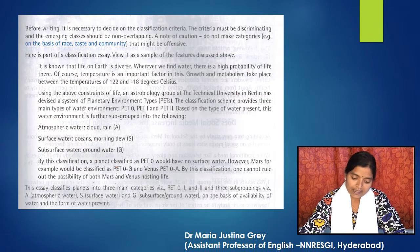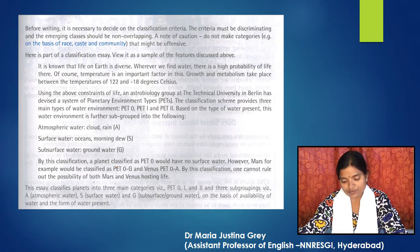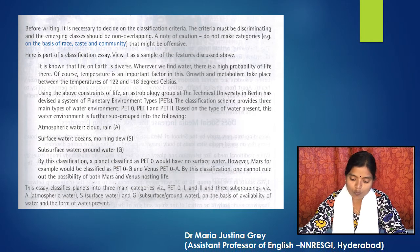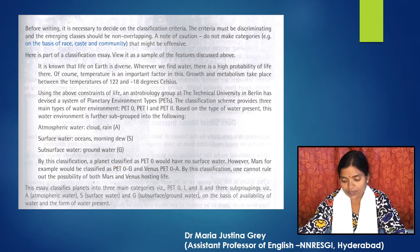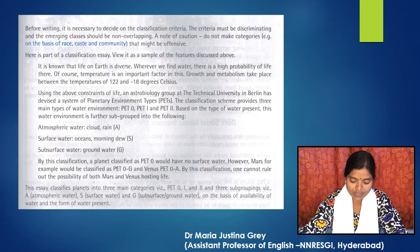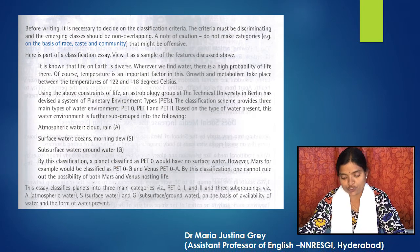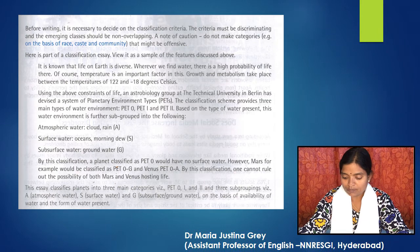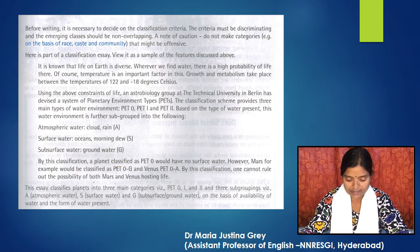This essay classifies planets into three main categories, namely PET-0, 1, and 2, and three subgroupings: A — atmospheric water, S — surface water, G — subsurface or ground water, on the basis of availability of water and the form of water present.